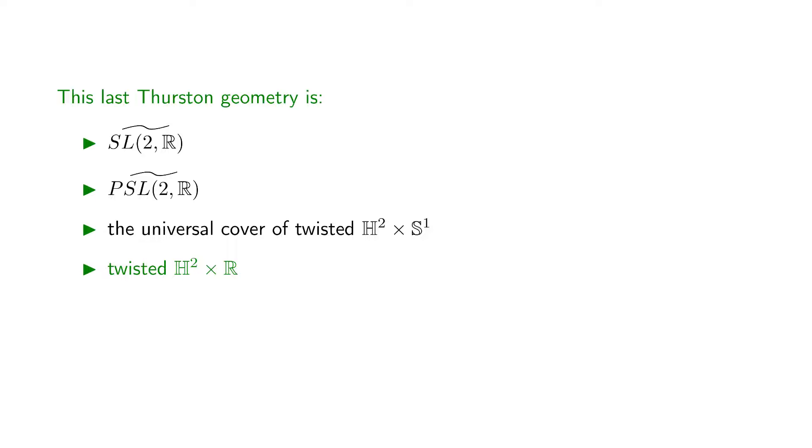In fact, we prefer to name this geometry twisted H² times R. A rather straightforward construction once you understand how the twisted products work. But for this video, we wanted to explain where the name Thurston used came from.